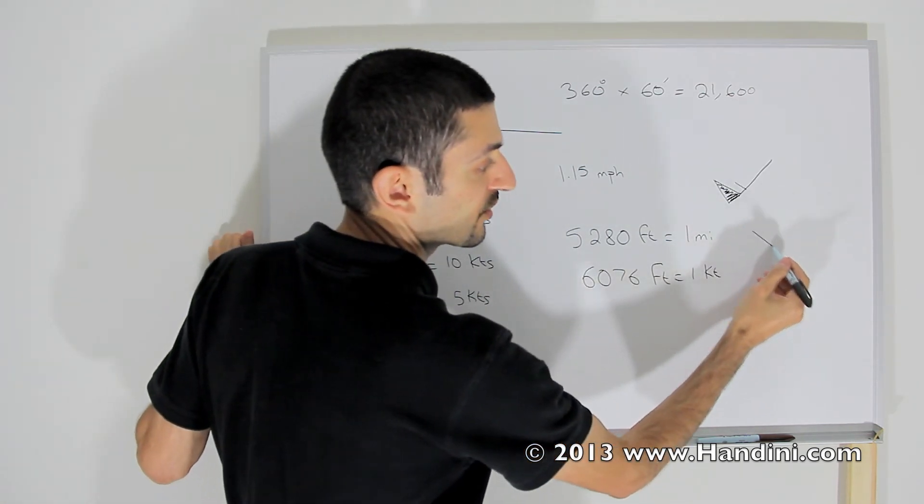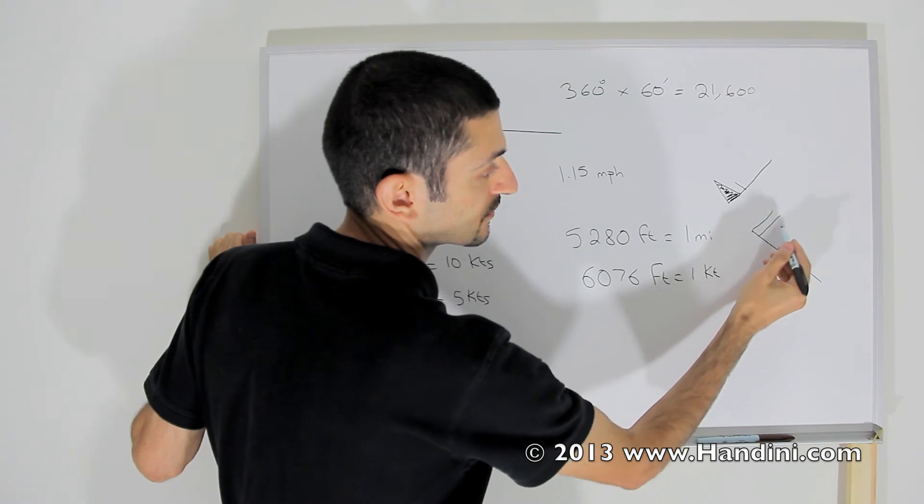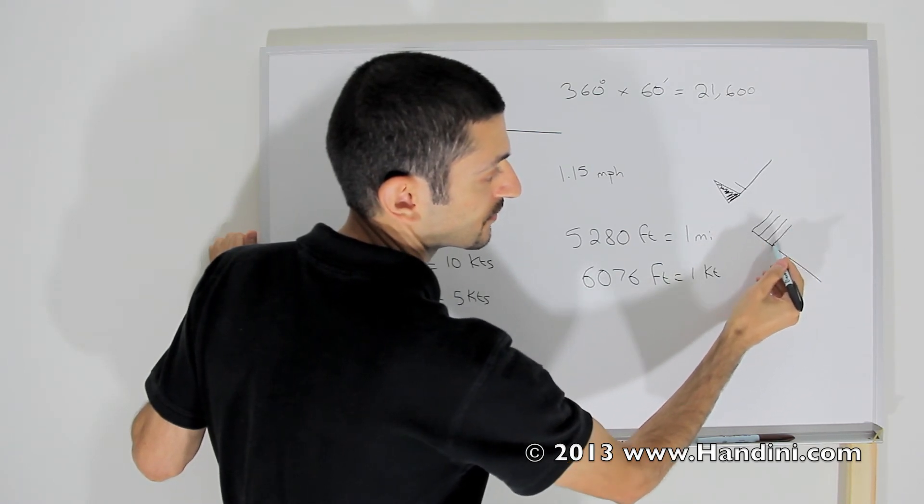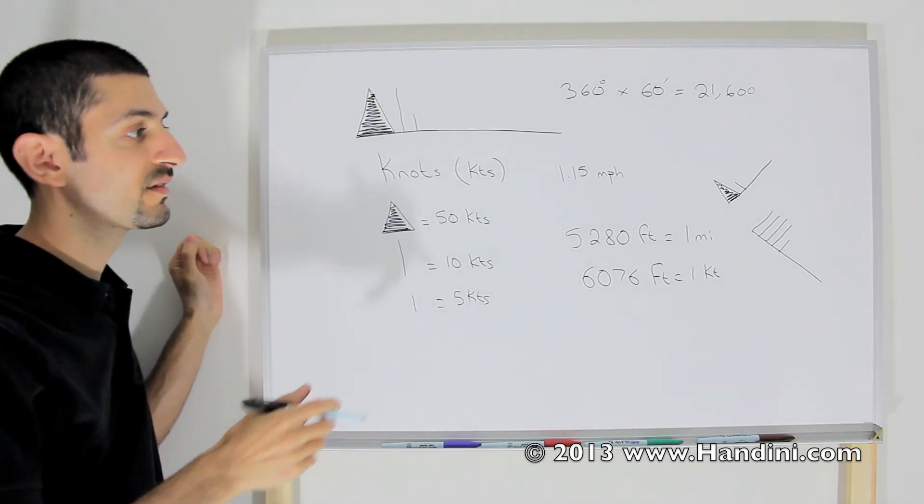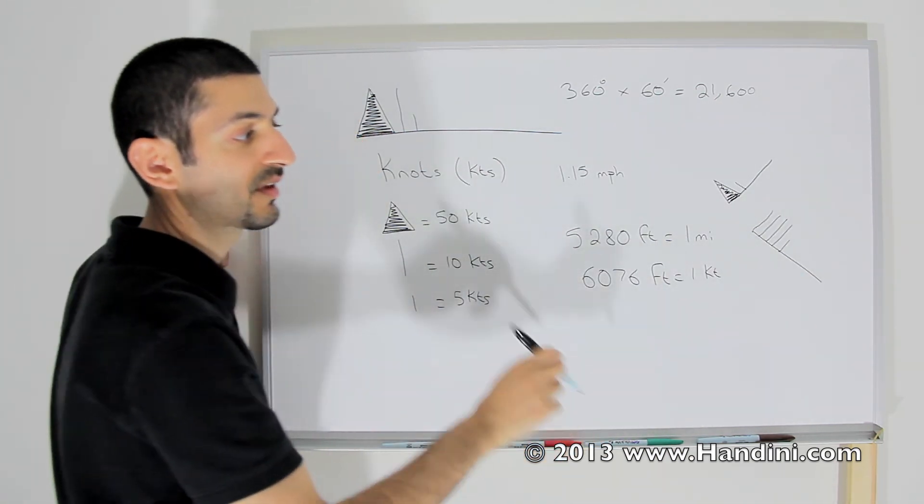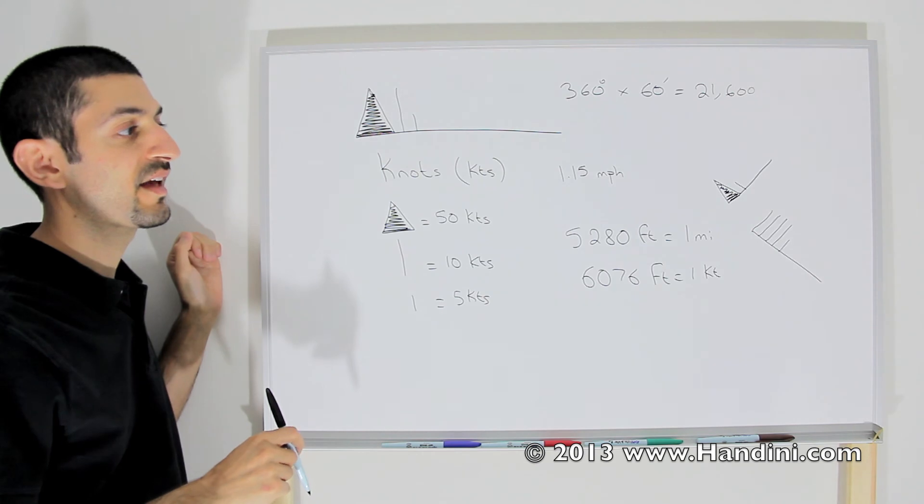If it's going this way, it's indicating that the wind in this region of the weather map is going to the southeast at 45 knots.